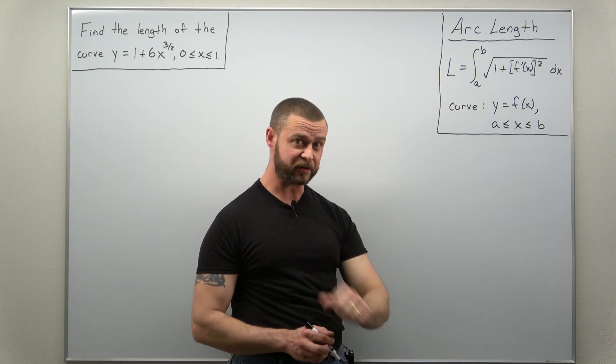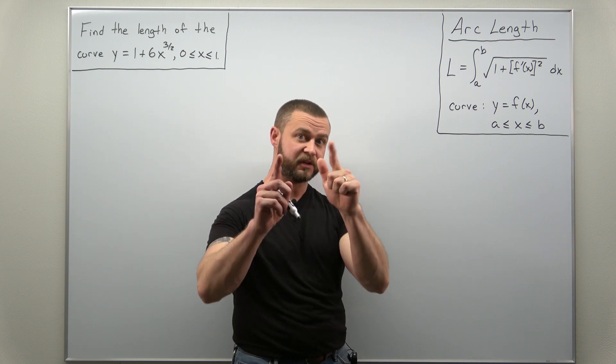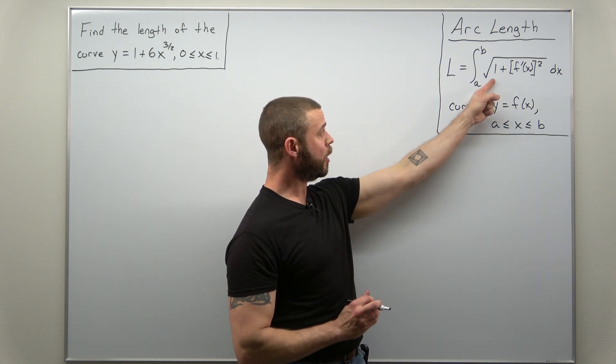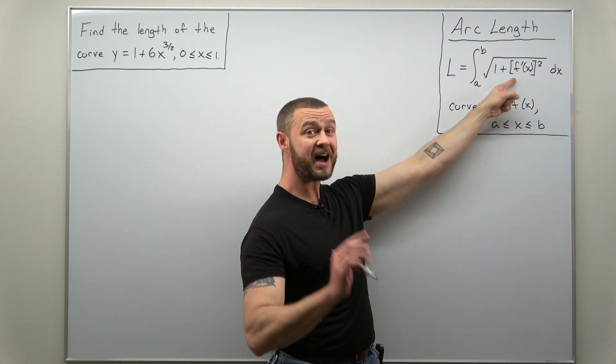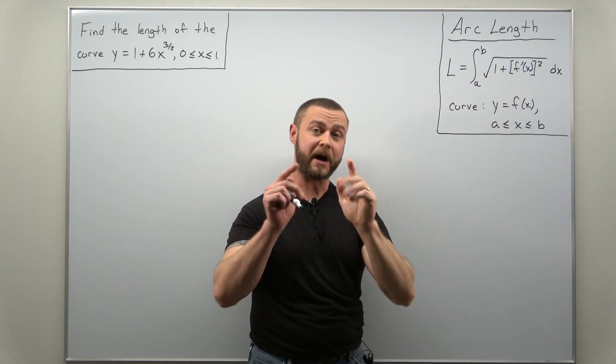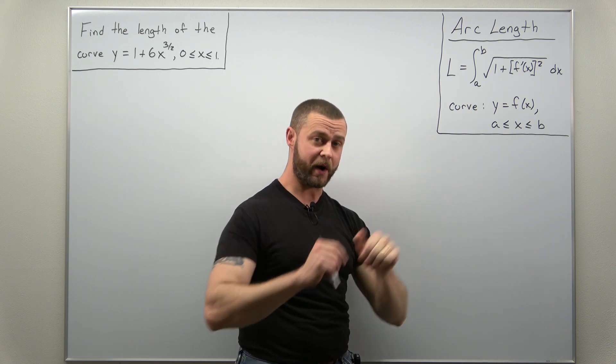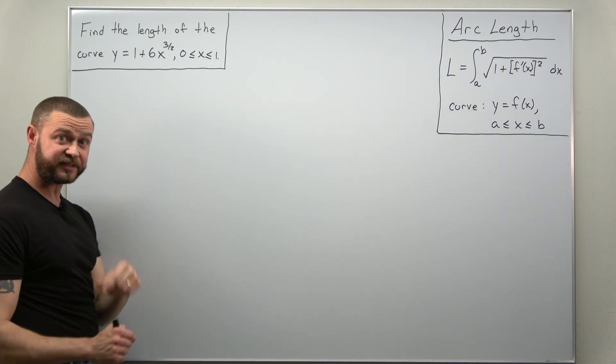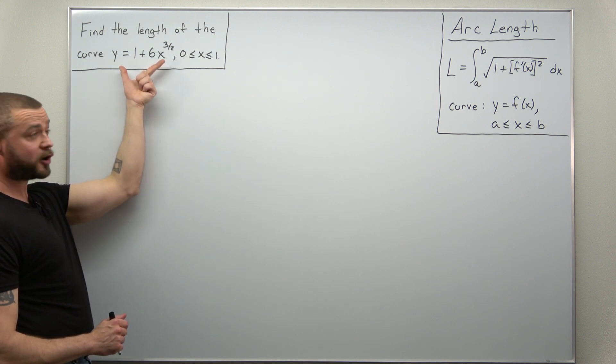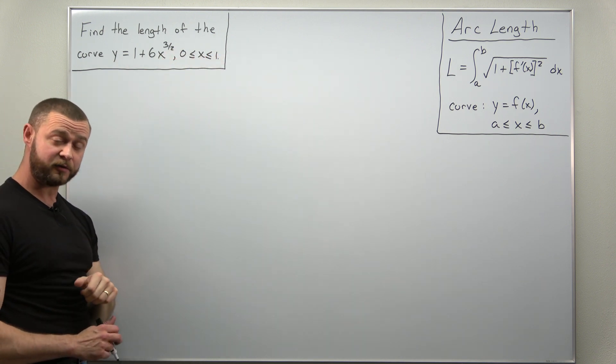Now the formula is rather simple. We integrate the square root of 1 plus the first derivative squared. It's worth pointing out that is not the second derivative but rather the first derivative squared. Now we have everything we need for this problem to set that up. We have the equation of our curve and then over an interval of x values.